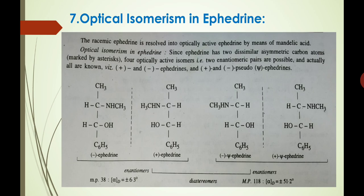Further proof for the proposed structure of ephedrine is given by its optical isomerism. The racemic ephedrine is resolved into optically active ephedrine by means of mandelic acid. Since ephedrine has two dissimilar asymmetric carbon atoms — carbon atoms in which the four valencies are attached to four different groups or atoms — four optically active isomers, that is two pairs of enantiomers, are possible. All are known: (+) and (−) ephedrine, and (+) and (−) pseudoephedrine.